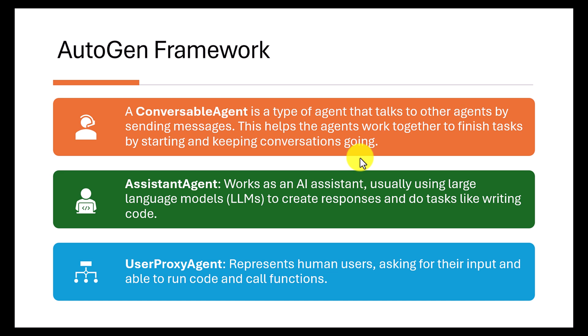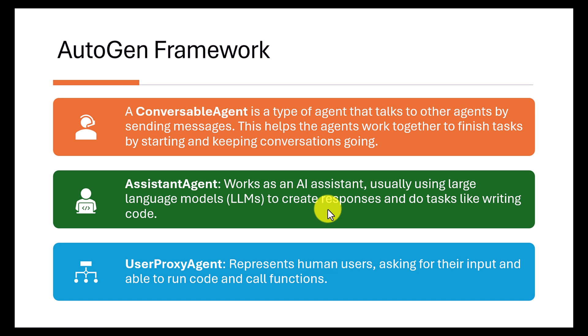There are mainly three kinds of agents available in AutoGen framework: ConversableAgent, AssistantAgent, and UserProxyAgent. ConversableAgent is the base class for the other two. AssistantAgent works as an assistant — it can create responses and do tasks like writing code or summarizing emails. UserProxyAgent represents the human user, asks for input, and can run code and call functions. In this video I'll just create a simple two-agent demo.